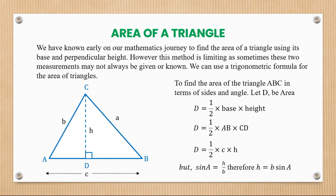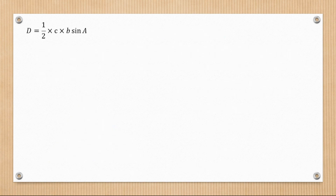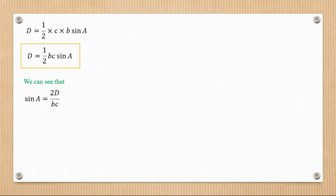We've chosen to use sine of capital A equal to h over b, but it is acceptable to use any of the sides. We could also find it using sine of capital B or sine of capital C, and all of them would still work. For this example we focus on sine of capital A. Substituting h equals b·sin(A) into the area formula, D equals a half times c times b·sin(A), giving us the formula: Area = ½bc·sin(A).